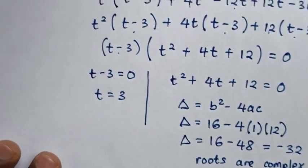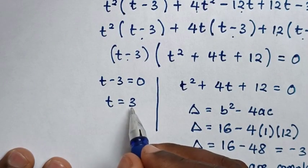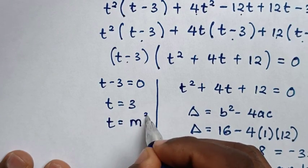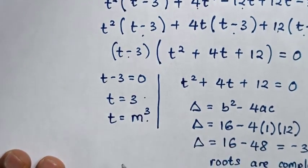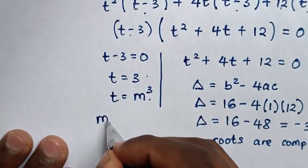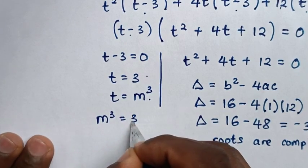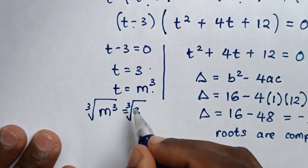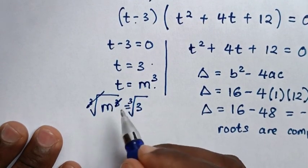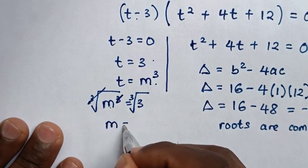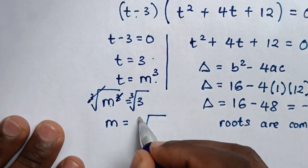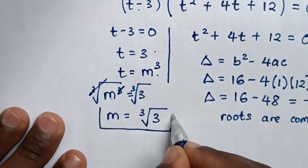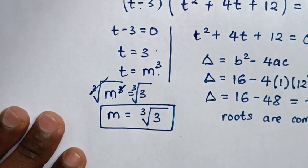To continue solving from the first solution t is equal to 3, we recall that before we let t is equal to m power 3. So comparing these two equations, it will be m power 3 is equal to 3. So this is our final answer for the value of m in this problem.